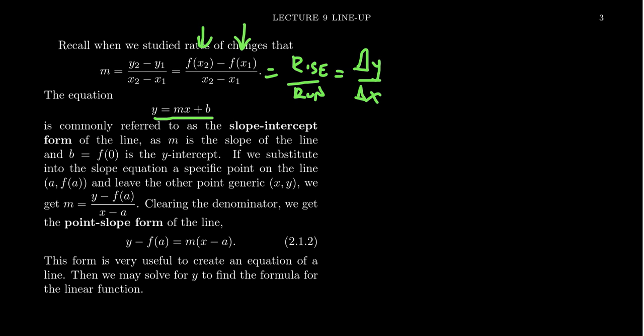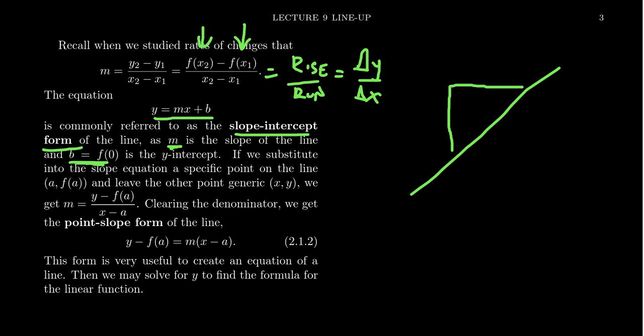This equation of the line, y equals mx plus b, is commonly referred to as the slope-intercept form of the line. If you plug in x equals 0, you get y equals b, so b is the y-intercept. And m is giving us the slope of the line — it tells us how quickly we incline. If your rise is so much and your run is so much, this ratio of rise to run, the change of y with the change of x, will tell you how quickly the function is rising or falling.